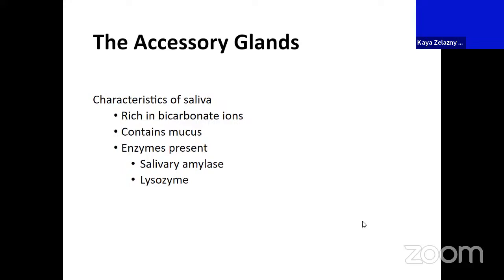Starting at the top with saliva — when producing saliva, it can be of multiple types depending on whether you're eating. Saliva keeps your mouth moist even when you're not eating. Saliva is rich in bicarbonate ions for buffering action. It contains mucus and enzymes. Salivary amylase begins carbohydrate digestion. We also have lysozyme, which acts almost as an immune defense — helping attack bacteria when you eat food. So there's a little bit of protection in the saliva.